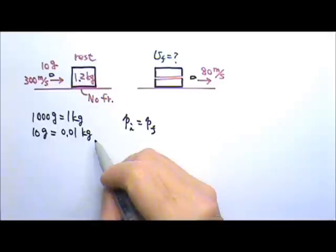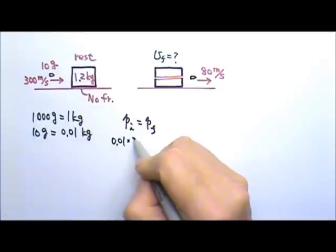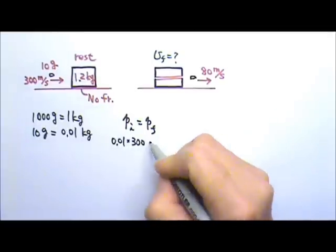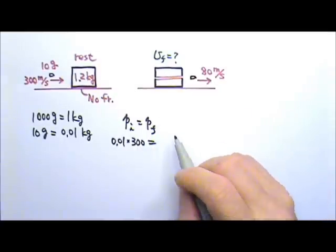So the mass of the bullet is 0.01 kg and the velocity is 300. Afterwards, both the block and the bullet have momentum.